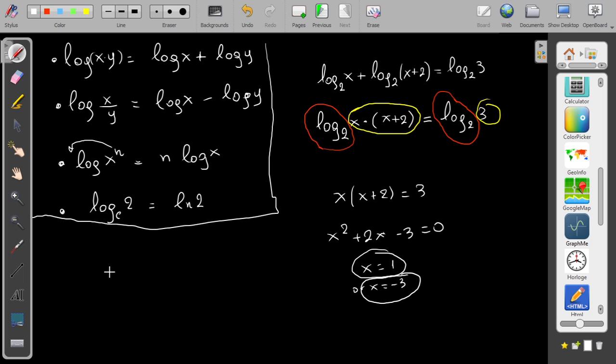We have to know that the logarithm, log base a of B, you should know that B should always be a positive number. In this case, for my X, for the first one, what's the restriction I have? I have that X should be bigger than 0, and for the other one, X+2 should be bigger than 0, which means X bigger than minus 2.